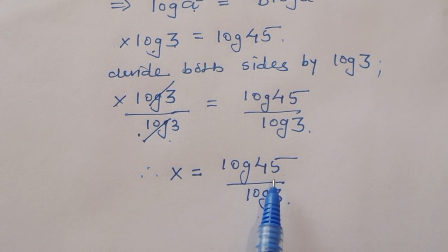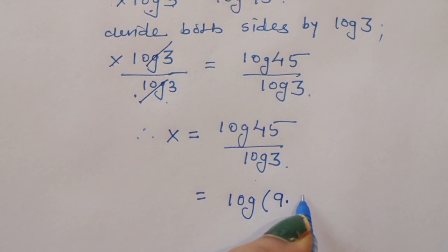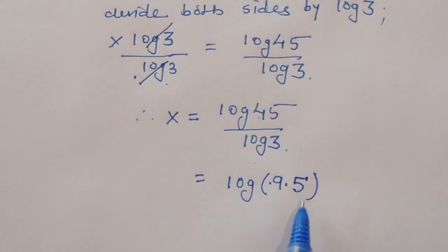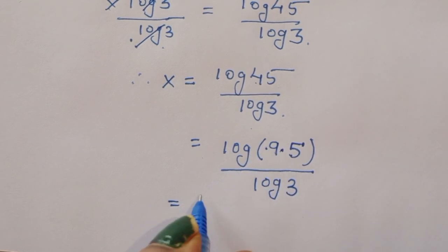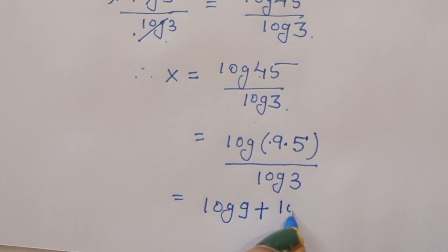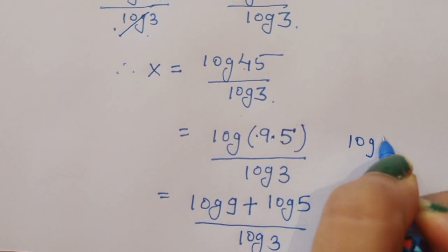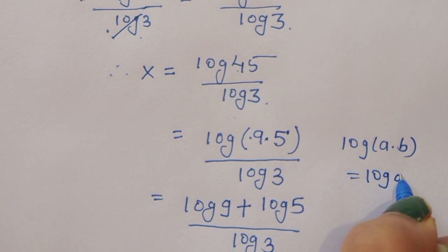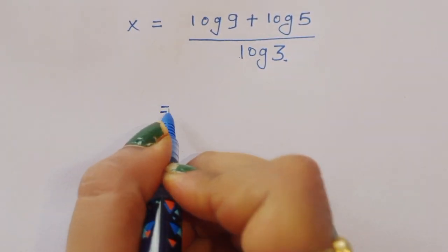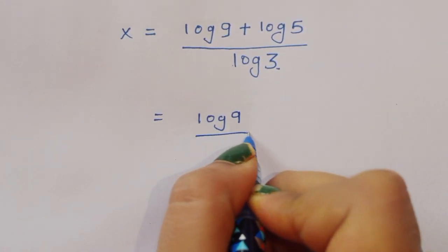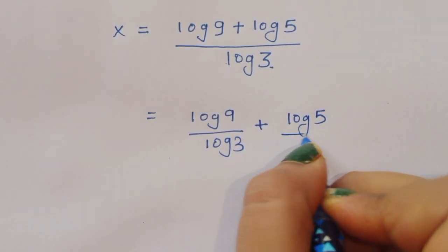Now log of 45 — we can write this as log of 9 times 5, divided by log of 3. Because 9 times 5 equals 45. Now since this is a product, we can write log of 9 plus log of 5 divided by log of 3, using the formula: log of a times b is equal to log of a plus log of b.